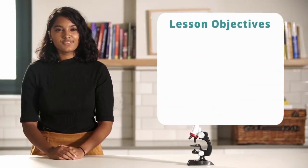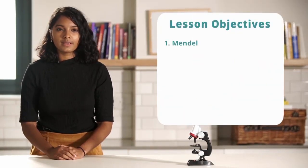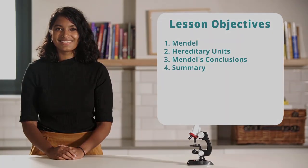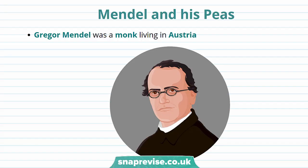In this video we'll be discussing Mendel and his peas, hereditary units, Mendel's conclusions, and finally a summary. We'll be talking about one of the most important scientists in biology. This scientist was called Gregor Mendel and he was a monk living in Austria. Mendel was trained in maths and natural science and his observations were essential to the founding of modern genetics.